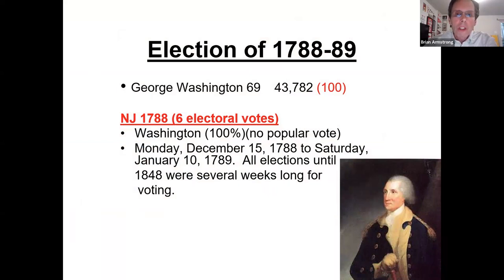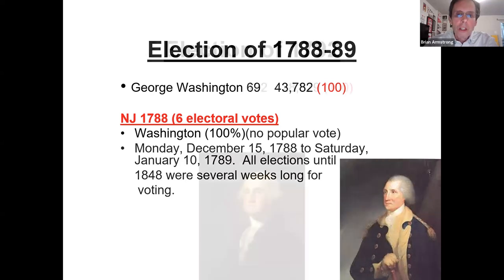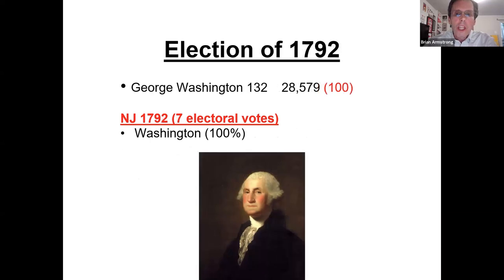In Washington's second election, 43,000 people voted for him the first time, but only 28,000 came out the second time. He got a lesser number of popular votes, though he still got all the electoral votes.